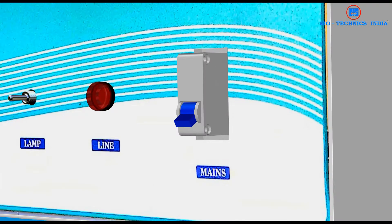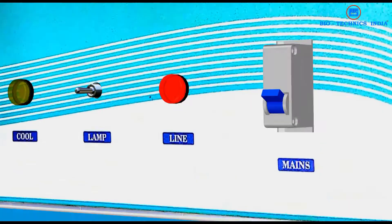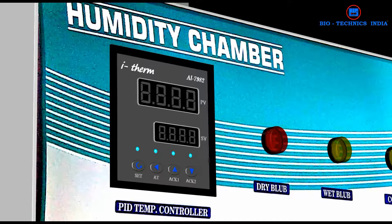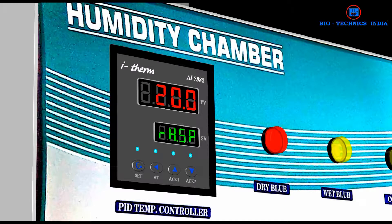To start the machine, switch on the mains, press the set key to indicate current temperature. Set the required temperature by using up and down key. Again press the set key to indicate relative humidity. Set the relative humidity by using up and down key. Press the set key to start the operation.